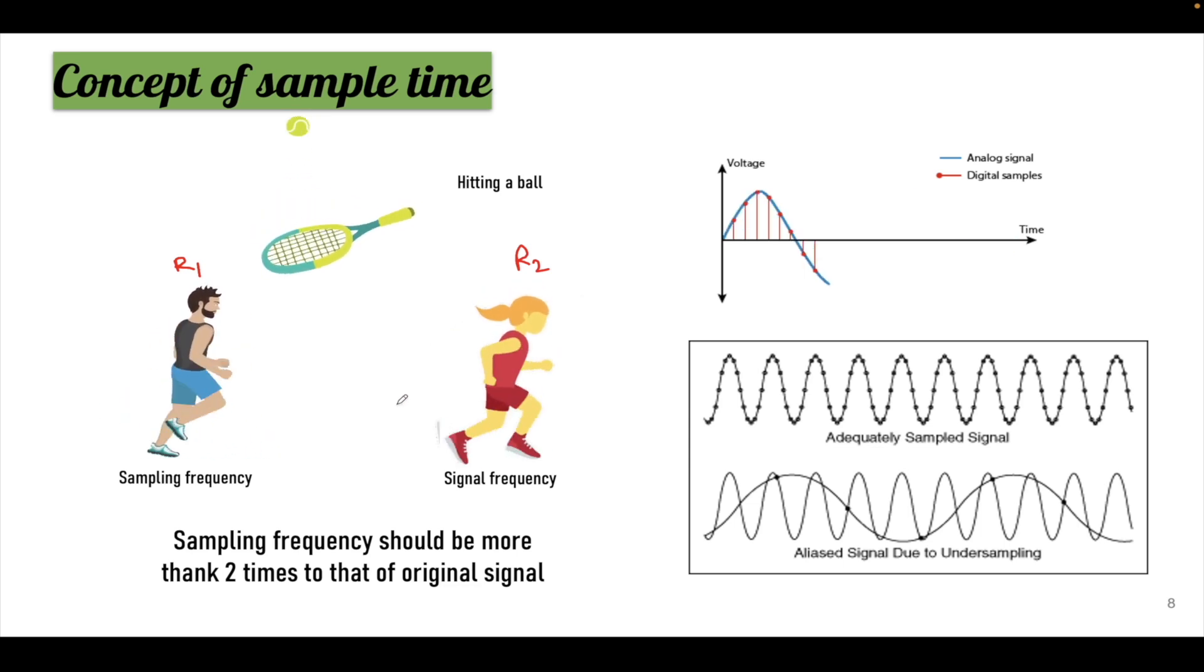The same way we will have the concept of signal frequency as well as sampling frequency. So here we are covering the concept of Nyquist criterion where it is talking about the concept of sample time. At what sampling interval we will have to sample a signal so that we will get proper information from the signal.